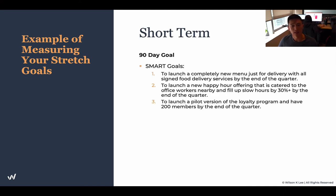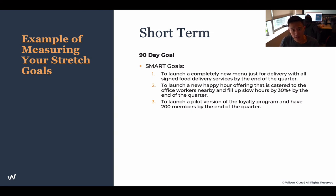For short-term, the 90-day goal is to launch a completely new menu just for delivery with all signed food delivery services by the end of the quarter. As we break down the goals and the deadline becomes smaller, we need to make sure the strategy, the outcomes, and the timeliness adhere to the duration we're setting. If we're talking about doubling our sales in 90 days, that's just unrealistic. If it's not realistic and not timely, it defeats the purpose of setting these goals. We set goals in a timely environment so we can take steps to achieve them.